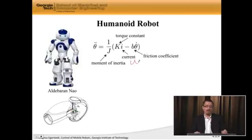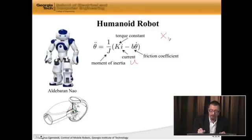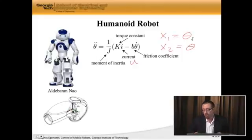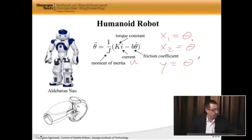Now luckily for us, when you buy a robot like this, someone has already figured out these physical parameters and there are user manuals that describe what these parameters are. Now we need to put this on state space form. And the first thing we're going to do, as always, is say x1 is theta and x2 is theta dot. We're also going to say that what we can measure on this thing is the angle itself. So y is going to be equal to theta.